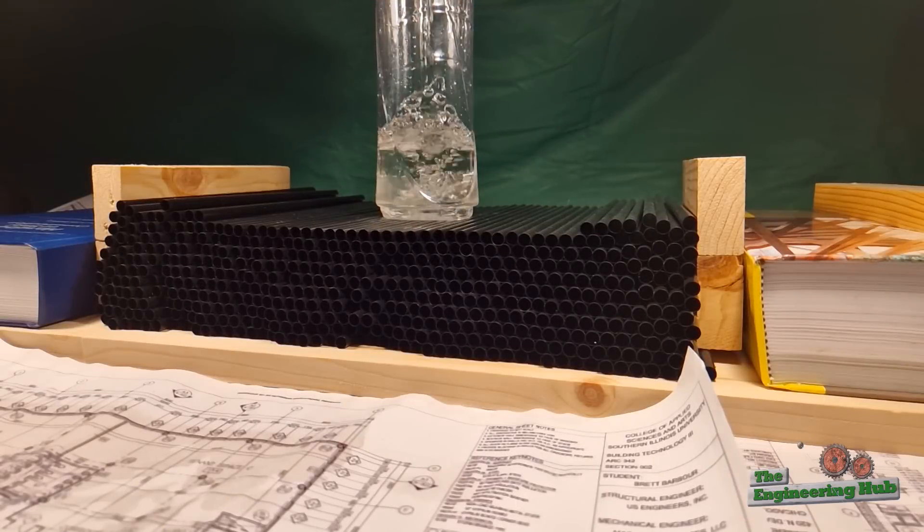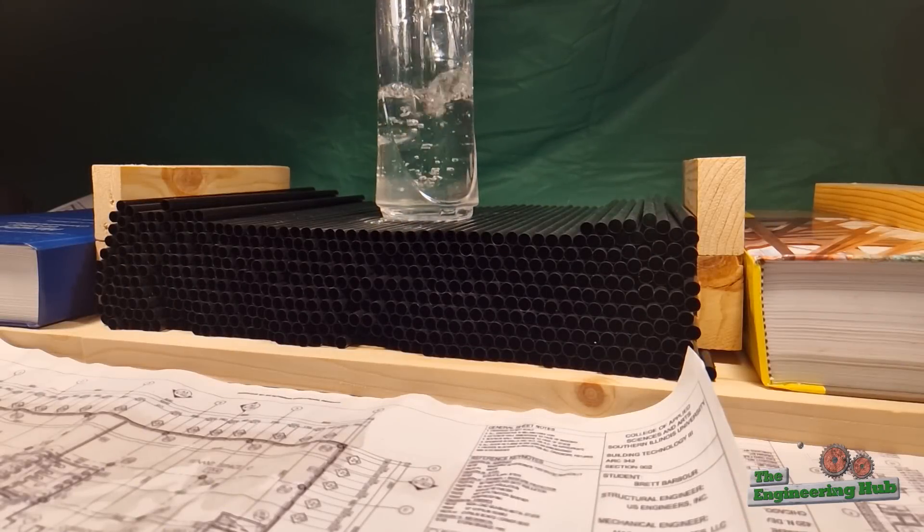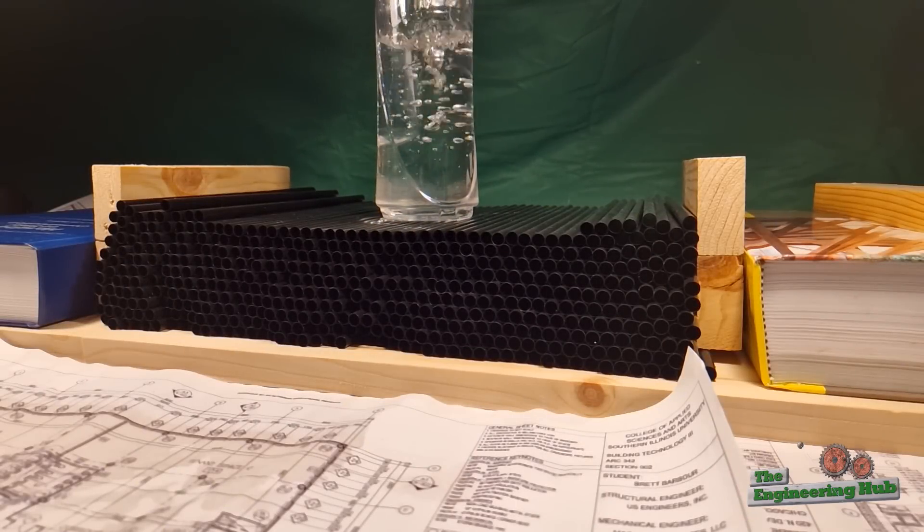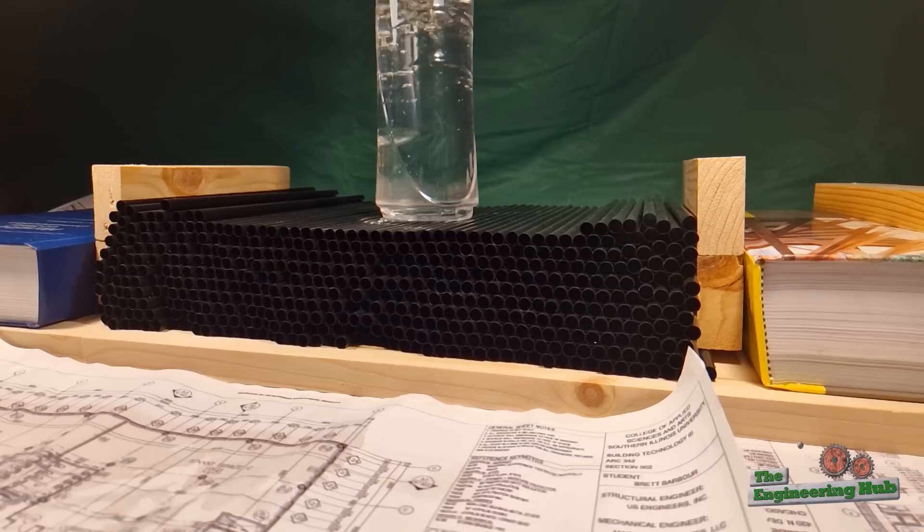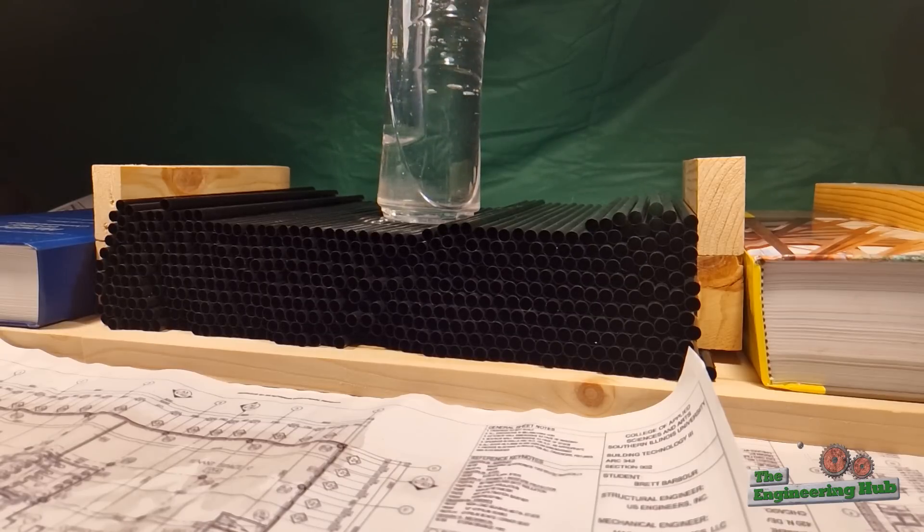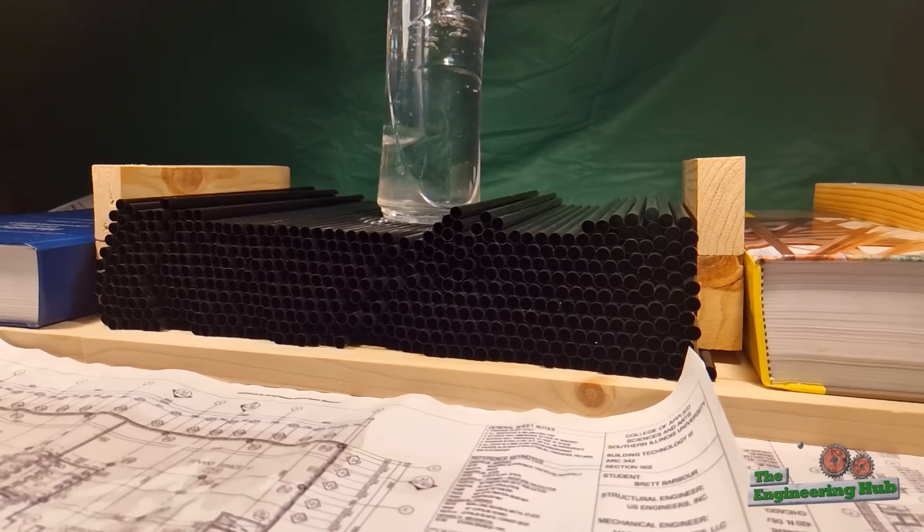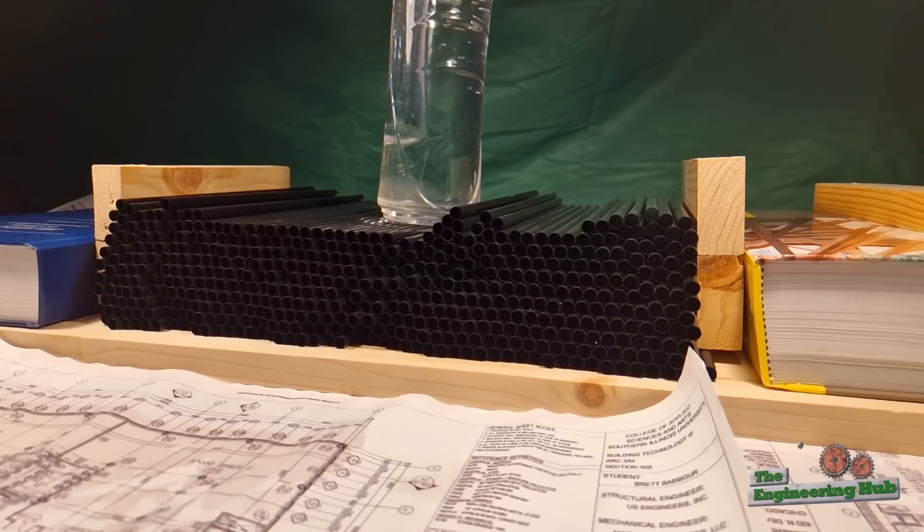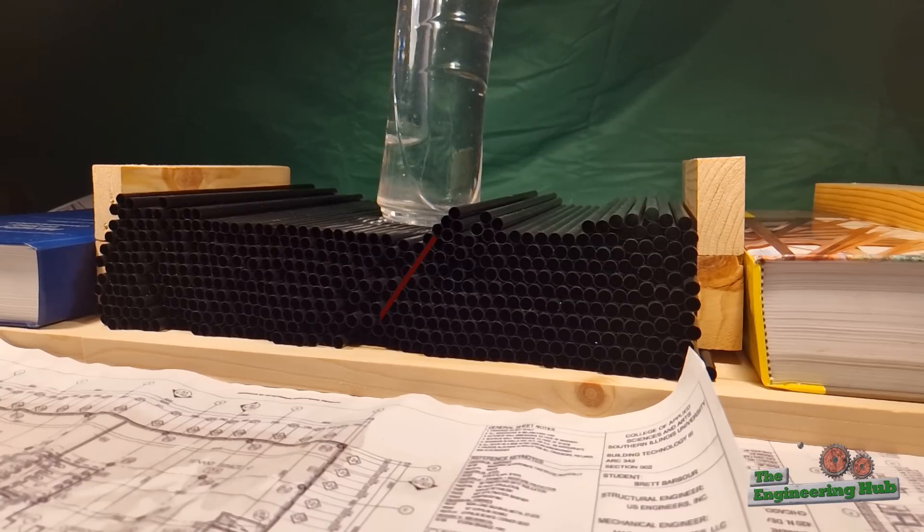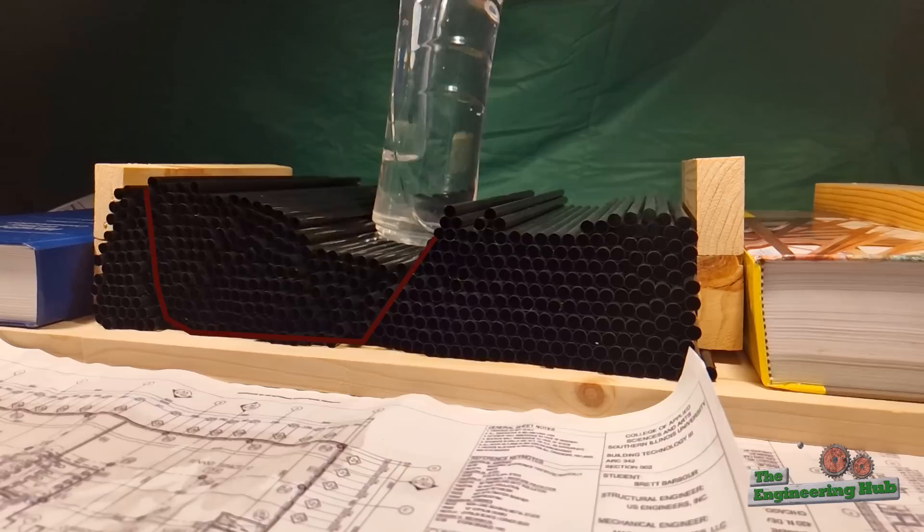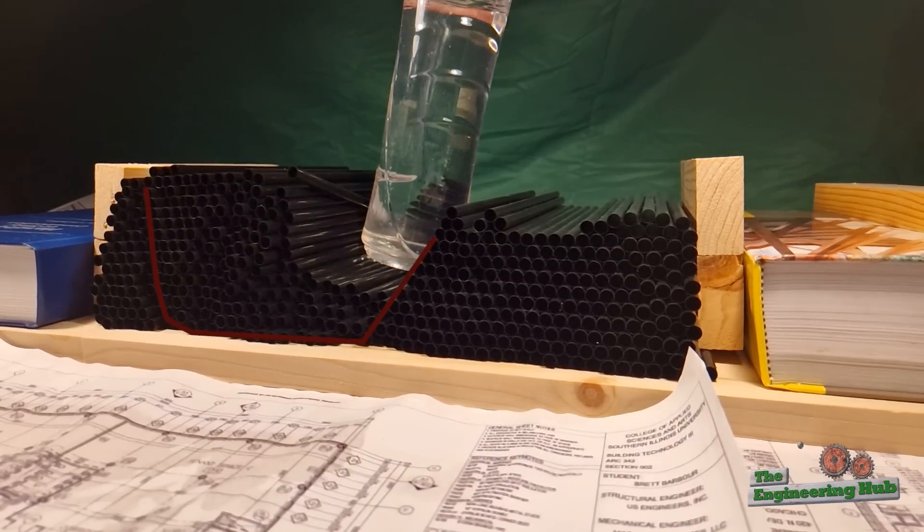Notice how as the bottle is being filled, or the structure being constructed, the added weight causes the particles to start rearranging. At a particular point, when the weight of the structure exceeds the friction force between the particles, or in this case the straws, a slip plane forms, starting from the corner of the foundation, exactly like Terzaghi predicted.